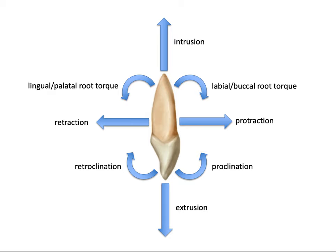Here's a helpful diagram listing names of directional tooth movement. Protraction refers to forward movement; retraction, backward movement — these are bodily movements. Intrusion and extrusion are also technically bodily movements, as they are versions of pure translation. Tipping the crown forward is proclination; tipping it backward is retroclination. We also have labial or buccal root torque and lingual or palatal root torque — just a summary of the names of those tooth movements.